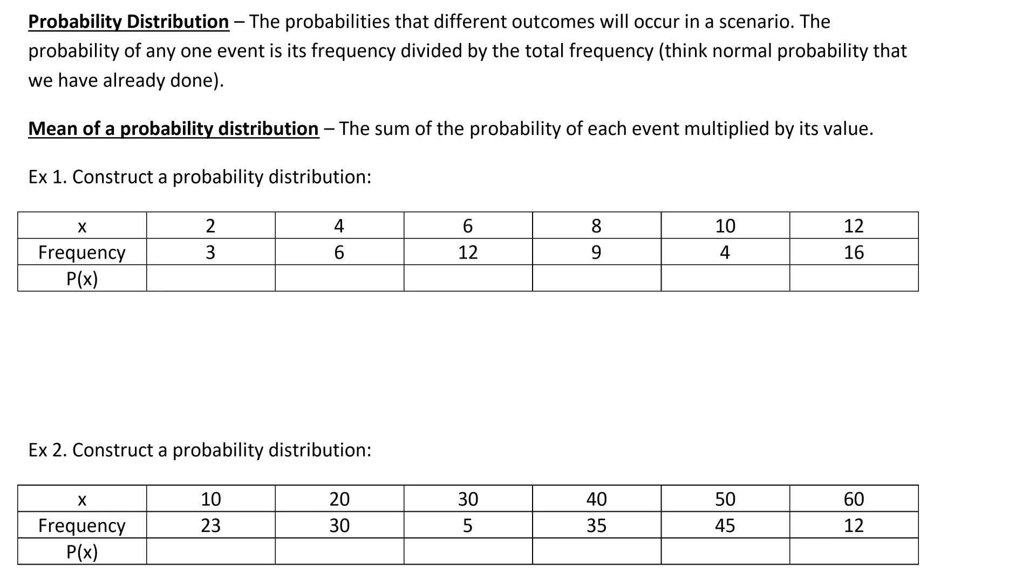For example one, we have the values that are up here, so that X, these are all the values. The frequency is how many times each value pops up. For example, the value two pops up three times, the value eight pops up nine times. Now we're not told what actual game we're playing or anything like that, so we don't know where these numbers are coming from, and that's fine. We just need to figure out the probability for each.